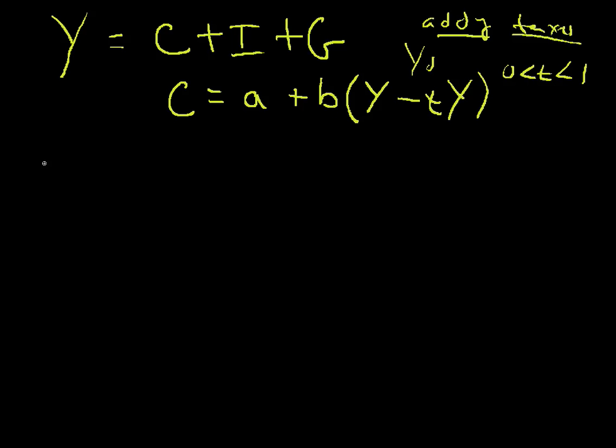Now the rest is just some simple algebra to give you a new multiplier. So we have y, which is how much the economy makes, equals a plus b times y minus ty, right?